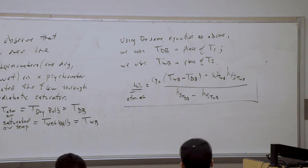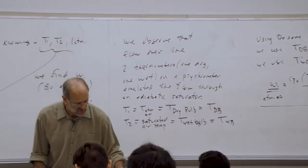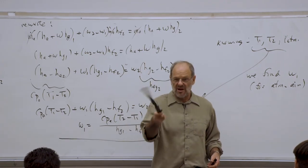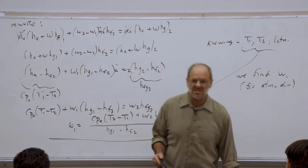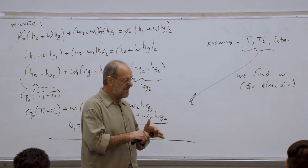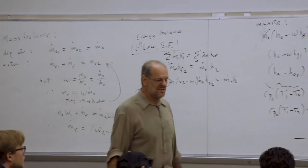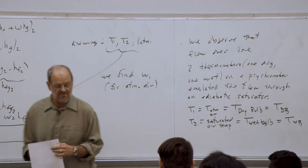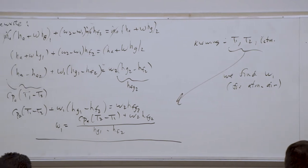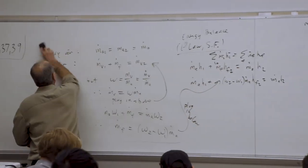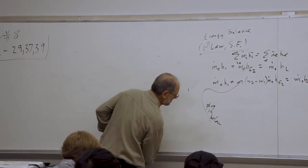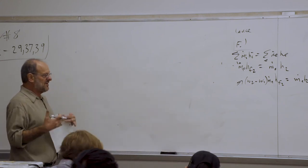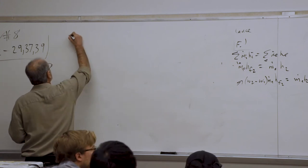We don't actually need to go through an adiabatic saturation process to use this equation. By the way, I've been mentioning for years that it would be cool for a student to do a senior project building an adiabatic saturator and comparing it to a psychrometer — but students don't want to build one, so it's still a possibility for the future. Now I'm ready to do the example problem. As long as we know the wet and dry bulb temperatures, we should be able to find omega and phi to give us a measure of the comfort level of the air.